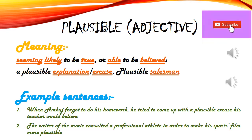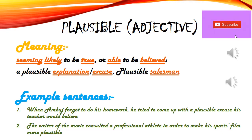Let's understand with example sentences. First: When a student forgot to do his homework, he tried to come up with a plausible excuse his teacher would believe. Jab kisi student ne homework nahi kiya toh usne socha ki kuch excuse dena hai, lekin wo excuse plausible hona chahiye ta ki teacher believe kare aur use lage ki usne intentionally deliberately homework nahi kiya. Toh usne plausible excuse banana ki koshish ki.